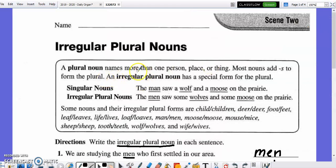An irregular plural noun is a name, person, place, or thing. Most nouns normally just add an S if it's plural. An irregular plural, however, normally has a special form for that plural.